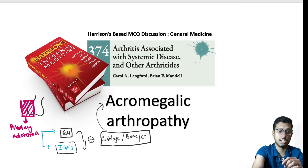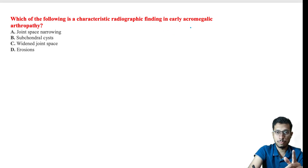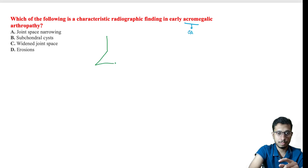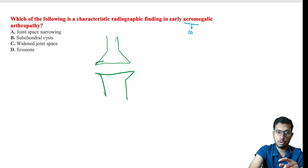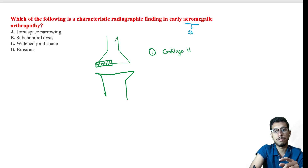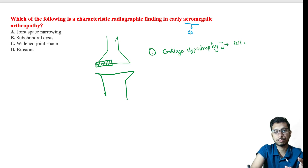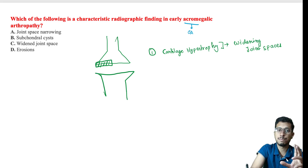The first MCQ: Which of the following is the characteristic radiographic finding in early acromegalic arthropathy? In acromegaly, the osteoarthritic changes begin with cartilage hypertrophy. When there is initial cartilage hypertrophy, the joint space widens. This widening of the joint space is the earliest change observed on radiograph.